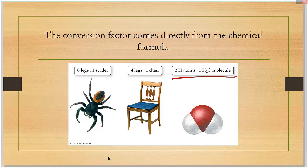For instance, if we're looking at water, there's two hydrogens. So we can relate hydrogen to the water molecule by saying there's two hydrogens in it. Just like we can say that there's four legs in a chair or eight legs on a spider, we're looking at what makes up the molecule. And then we're going to translate that into using it in conversions.